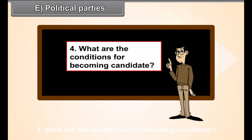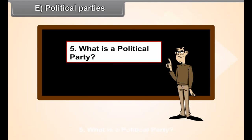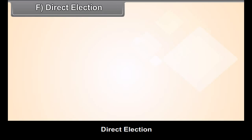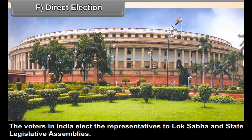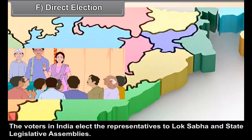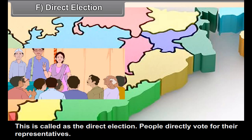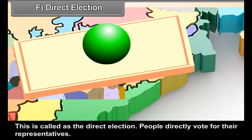The role of opposition parties is equally important in democracy. Review questions include: What is Universal Adult Franchise? What is a constituency? What are the conditions for becoming a voter? What are the conditions for becoming a candidate? What is a political party? Do you know the name of the main opposition party in India currently?